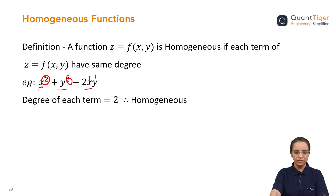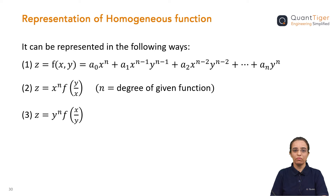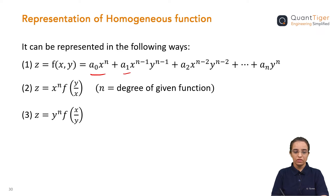This is how a homogeneous function is decided. Now let us look at how we represent a homogeneous function. If we find that a given function is homogeneous, there are three different ways to represent it: one using constants a₀, a₁, a₂, a₃ with x and y powers decreasing; second, z = x^n · f(y/x); or third, z = y^n · f(x/y).